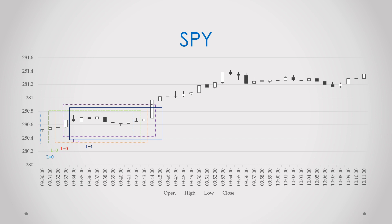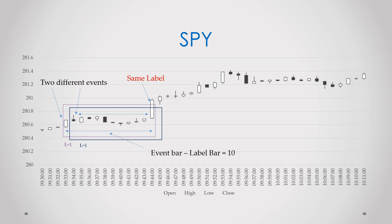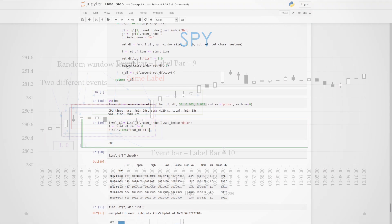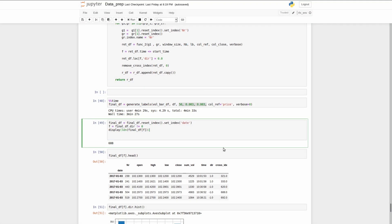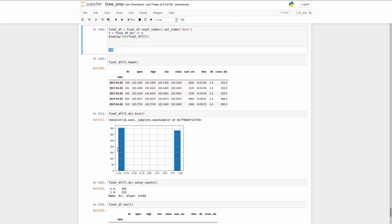After the labeling process is finished, we will get a lot of similar labels — so called crossing labels. We don't want to have the same labels for different events. In our case, we will leave only the labels that have the closest distance between the first bar of the window and the bar where the price crosses the window barrier. Let's check how many labels we have. We have around 700 labels and they are distributed fairly equally. Not bad.